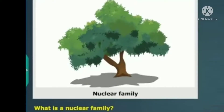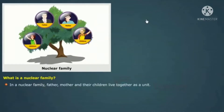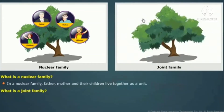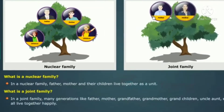What is a nuclear family? In a nuclear family, father, mother, and their children live together as a unit. What is a joint family? In a joint family, many generations like father, mother, grandfather, grandmother, grandchildren, uncle, aunt, etc., all live together happily.